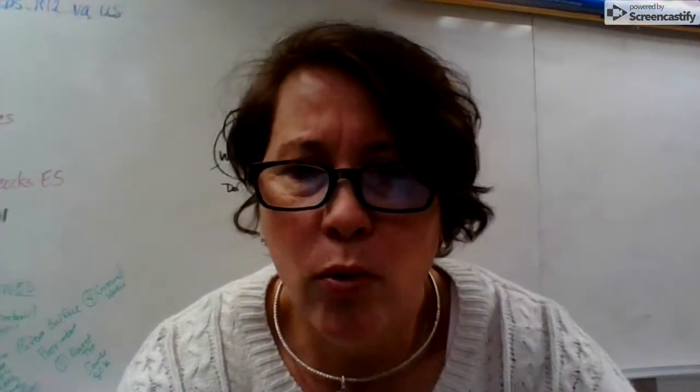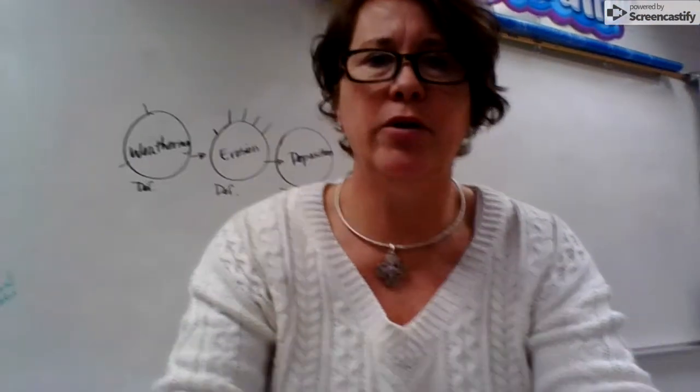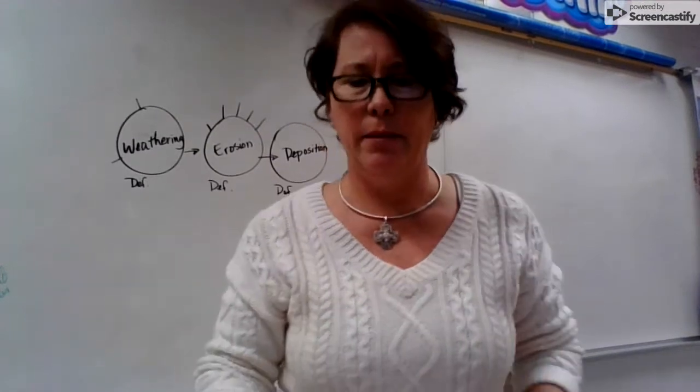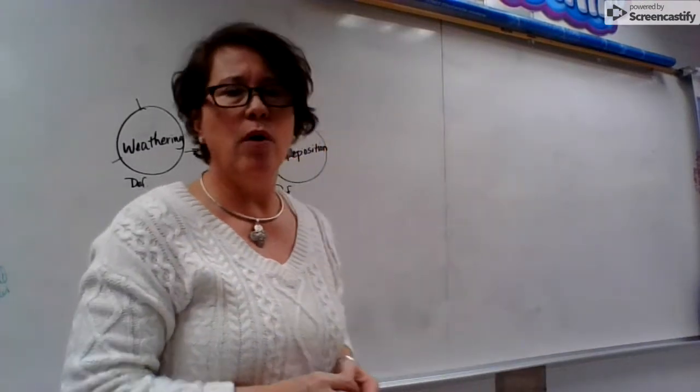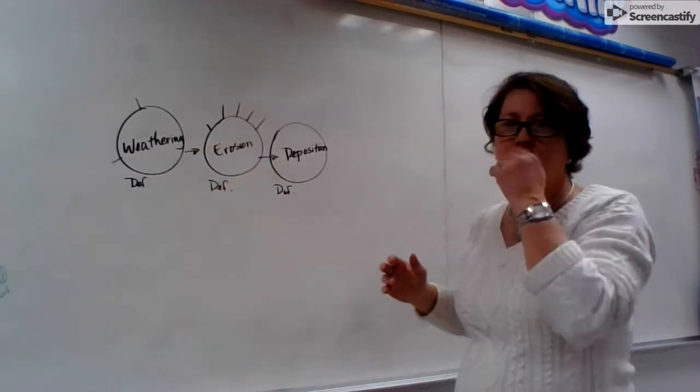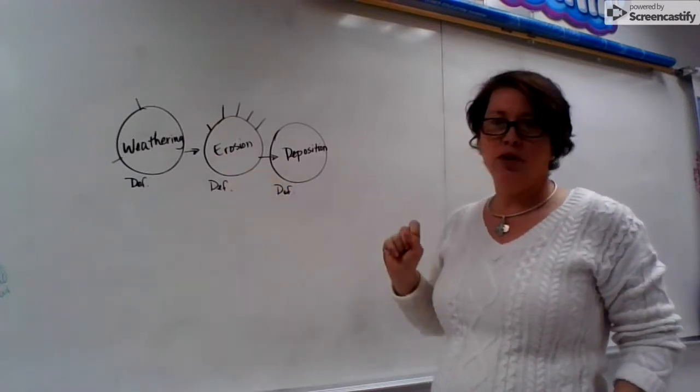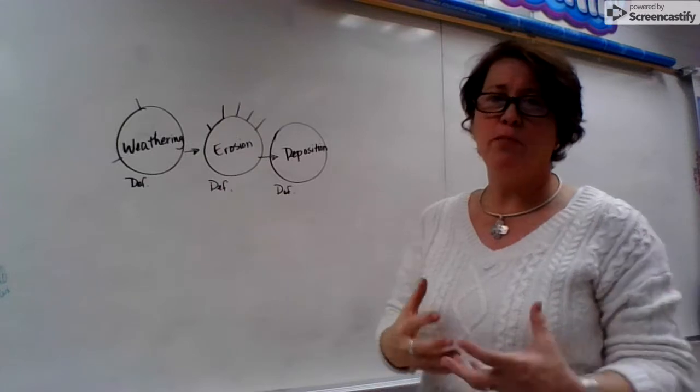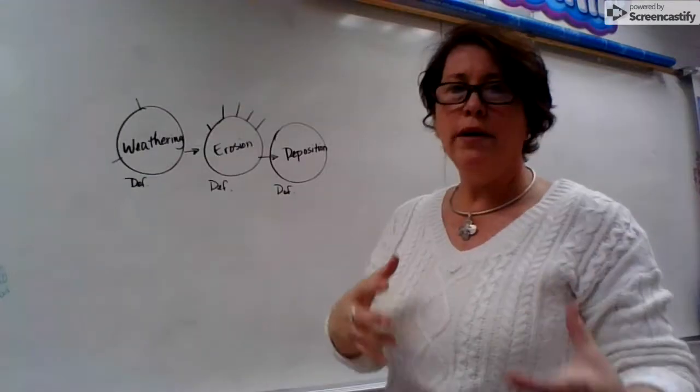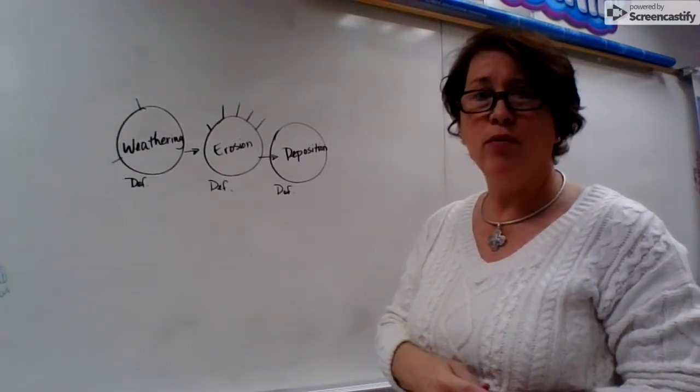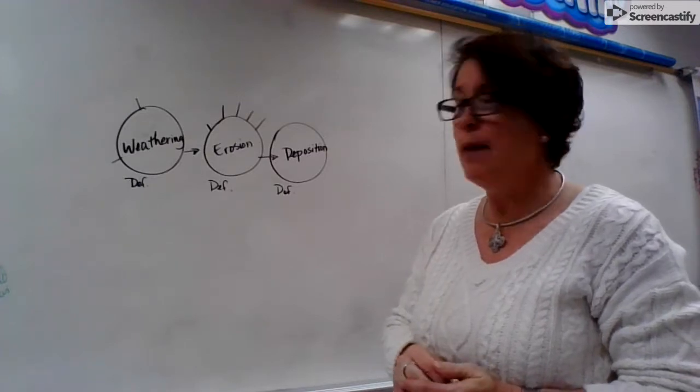I've got a diagram up on the board. Let me move this over a little bit so you can see it behind me. So I've drawn three different things up here. We've got weathering, erosion, and deposition. That's what happens to surface processes and things on the top of the ground here on our planet. We have weathering, erosion, and deposition that happens.